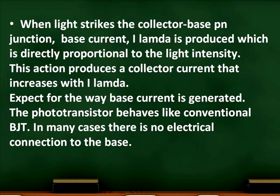When light strikes the collector-base PN junction, a base current I_lambda is produced which is directly proportional to the light intensity. This action produces a collector current that increases with I_lambda, except for the way the base current is generated.